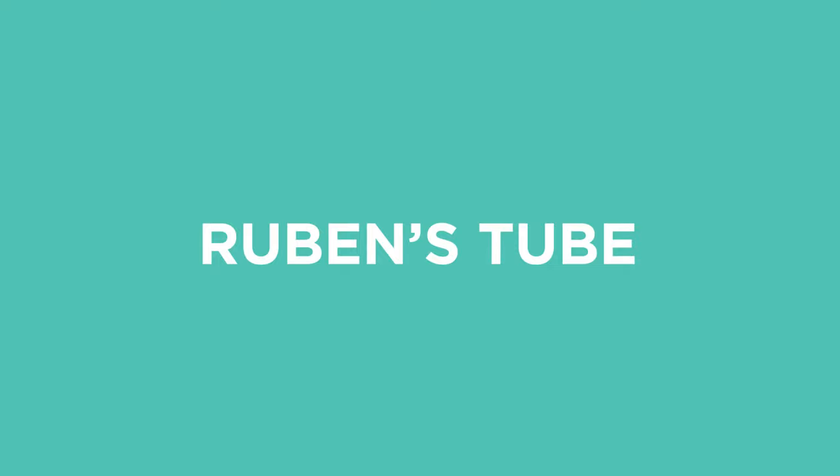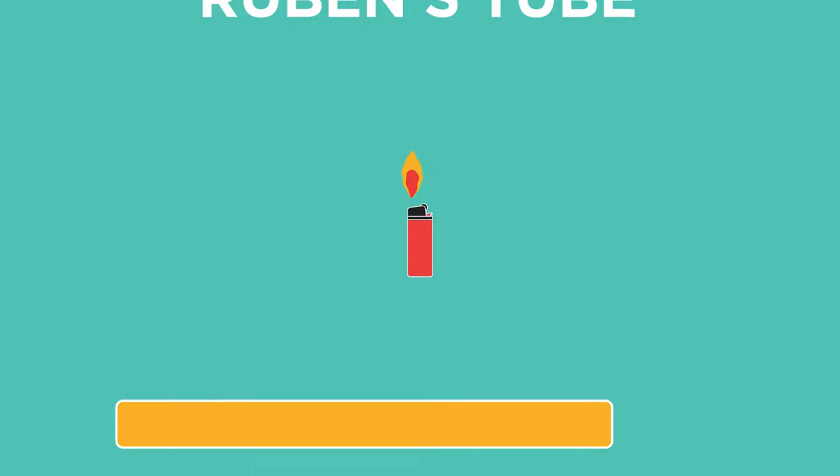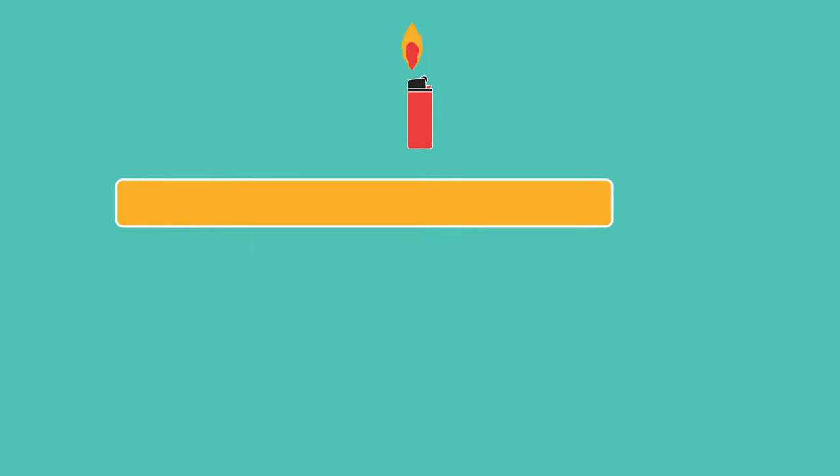The Rubens tube is a spectacular physics experiment involving fire to demonstrate that sound is a longitudinal wave. The Rubens tube is a hollow tube that is filled with a flammable gas, usually propane.